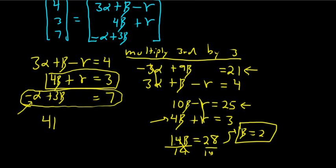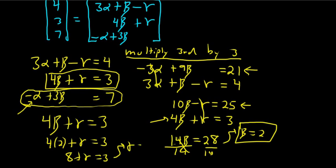I'm going to plug it back in here. So we have 4 beta plus gamma equals 3. Plug the beta in there. We get 4 times 2 plus gamma equals 3. So we have 8 plus gamma equals 3. So subtracting 8 looks like we get gamma equals negative 5. Gamma equals negative 5 should be good.